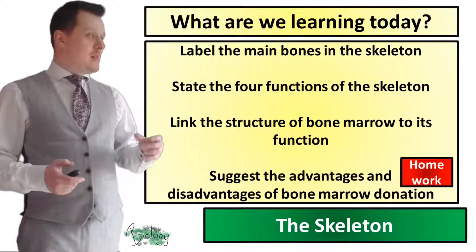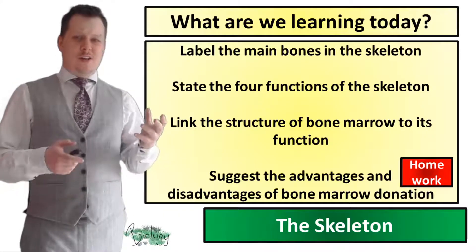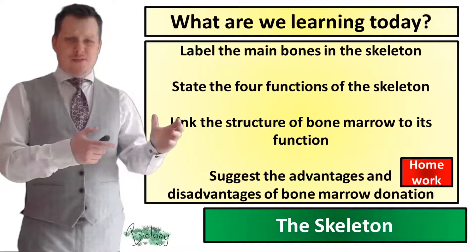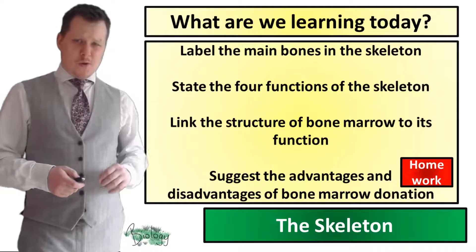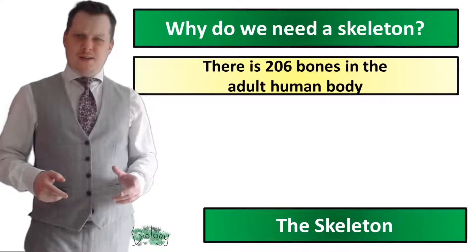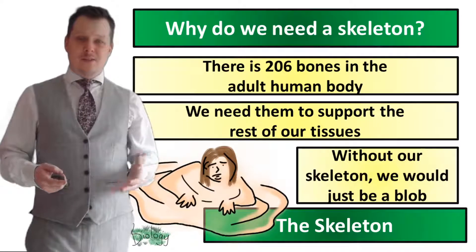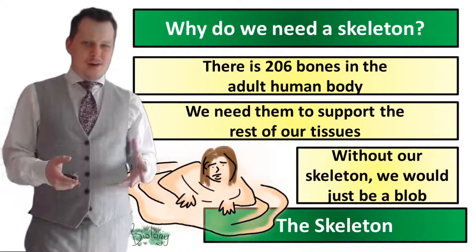In this lesson we're going to be labelling the main bones of the skeleton, we're going to state the four functions of it, we're going to link the structure of the bone marrow to its function, and there's homework as well which we'll talk about at the end. There are 206 bones in the adult human body and we need them to support the rest of our tissues. Without the skeleton we'd simply just be a blob unable to move.